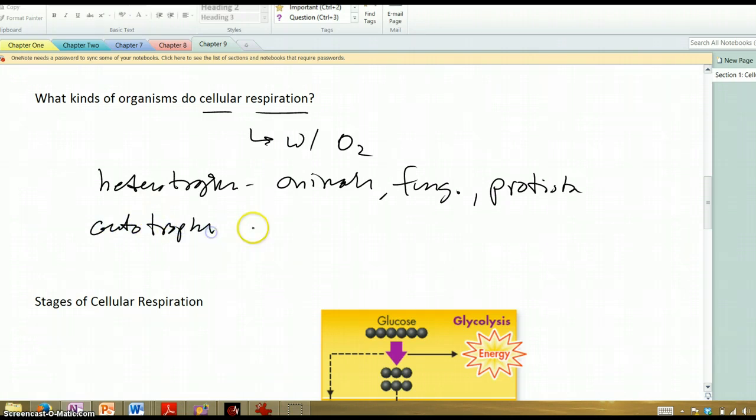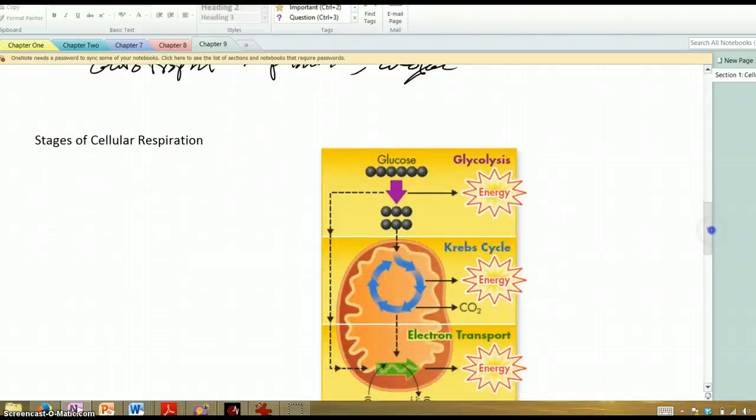But autotrophs also do this. They are simply making use of the food that they have made. So, of course, plants do this. Algae do this. But again, they're just making the food that they're going to break down in cellular respiration. They don't have to consume it.